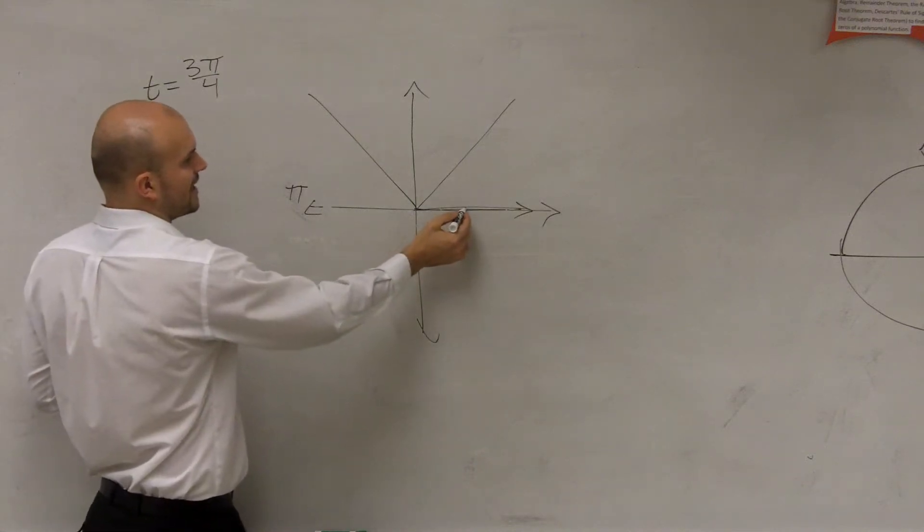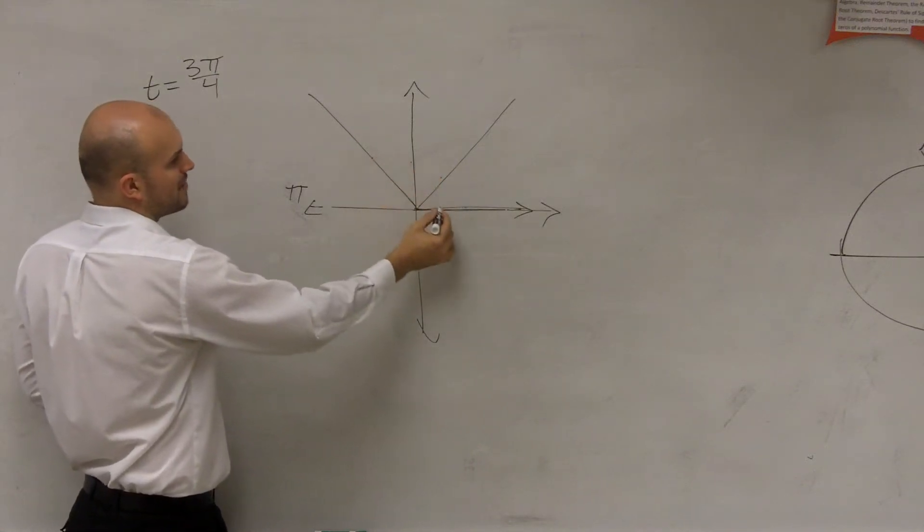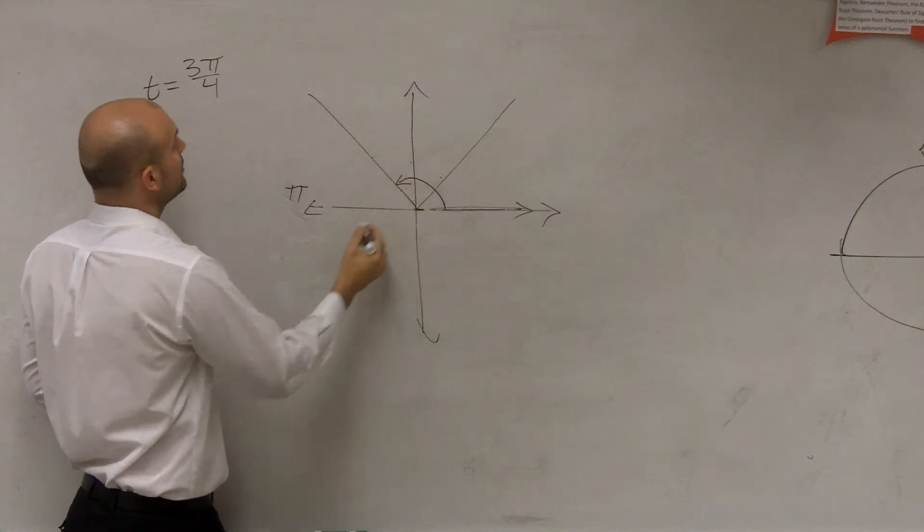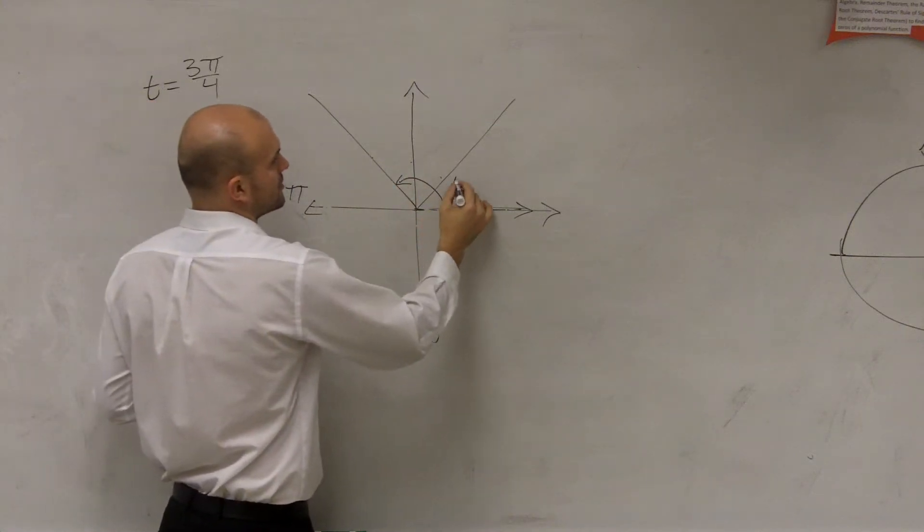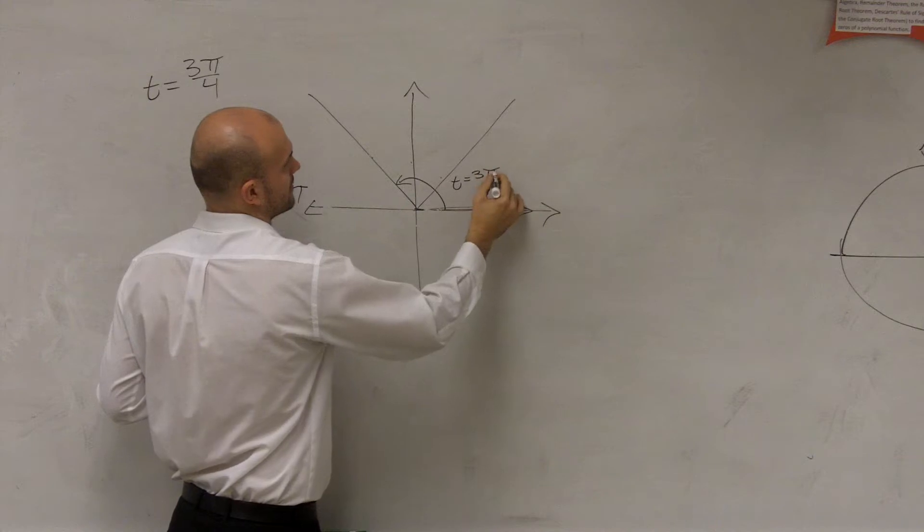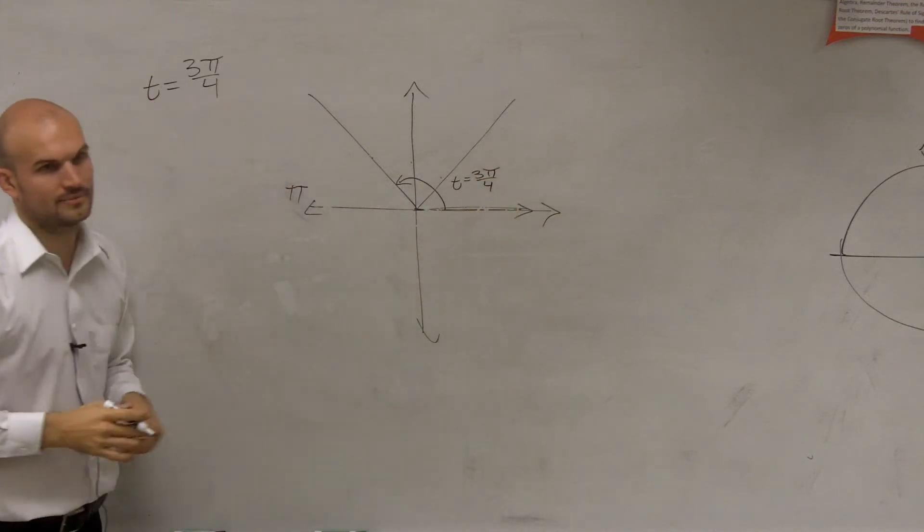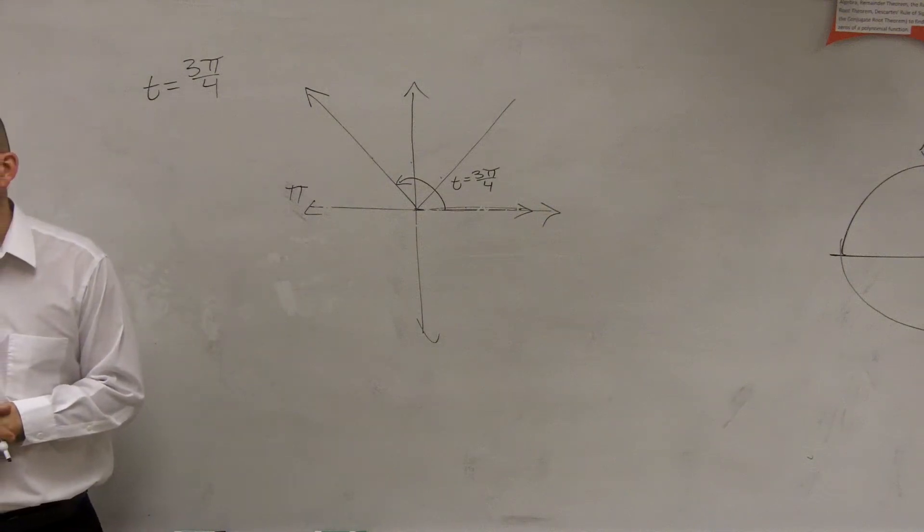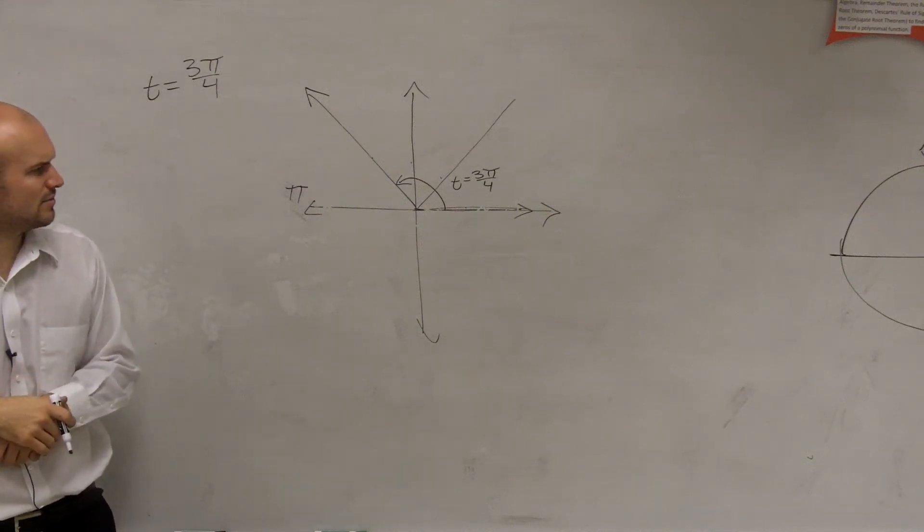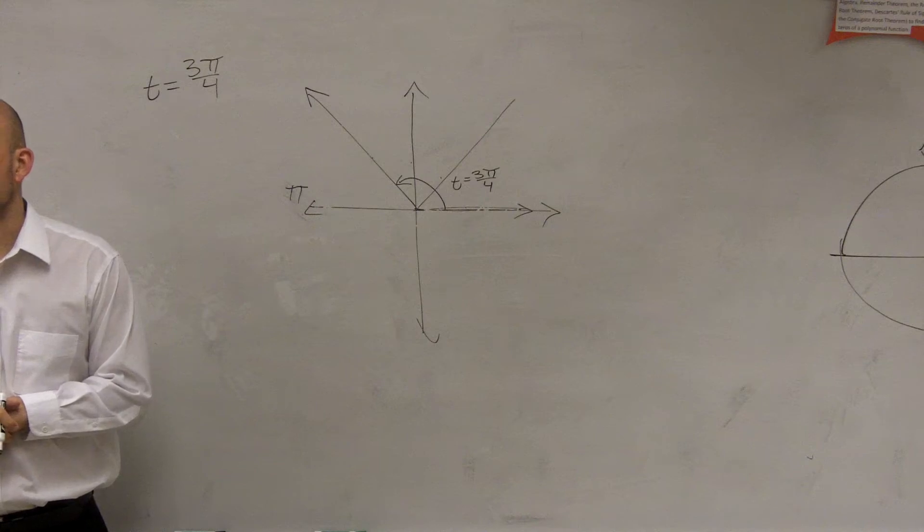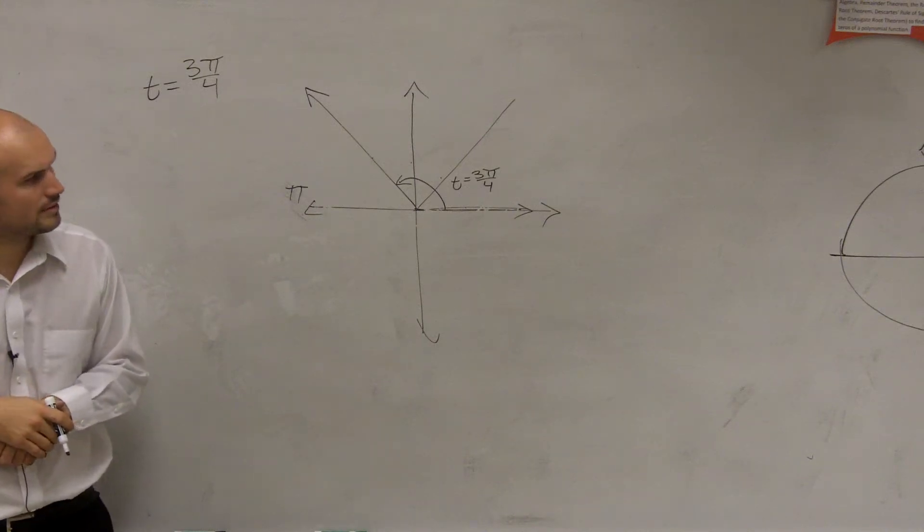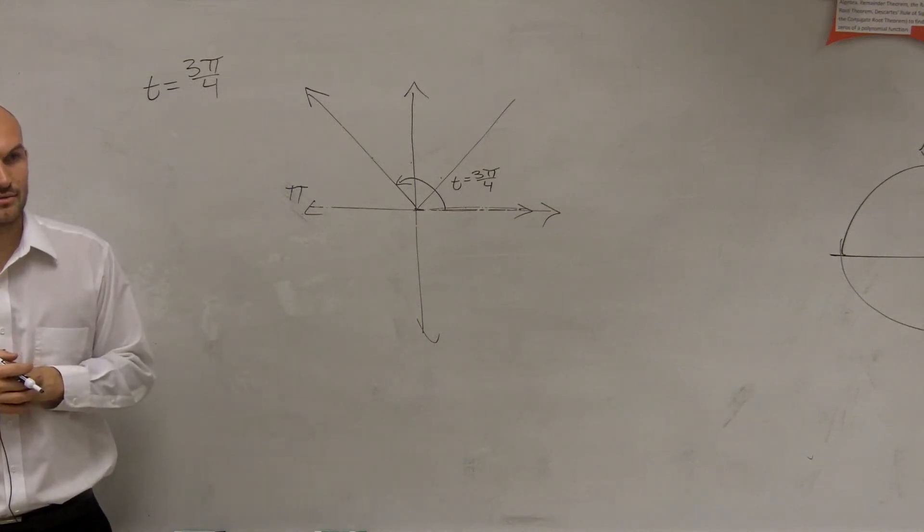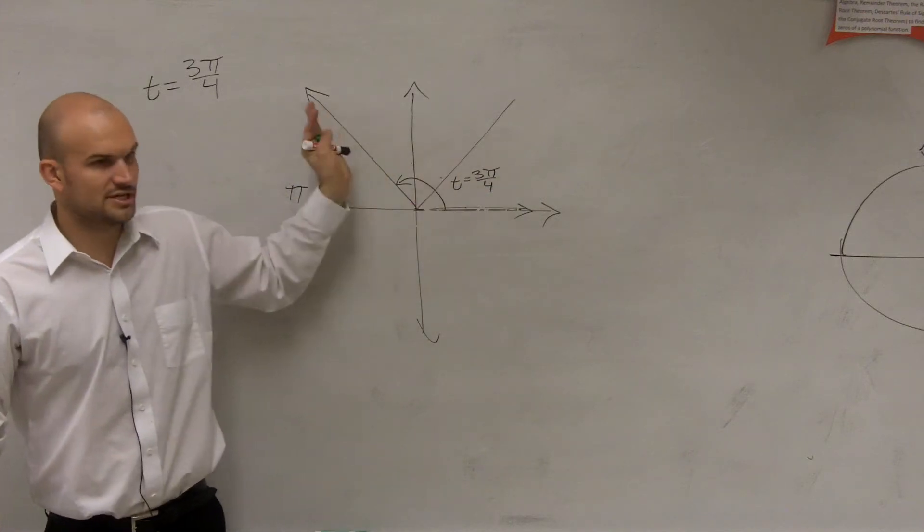So if this is 1π, 2π, 3π/4, the angle 3π/4, which we're calling t, is right there. That's your angle right there. It looks like what? So everybody understands how I got to the angle. The angle is the rotation right there.